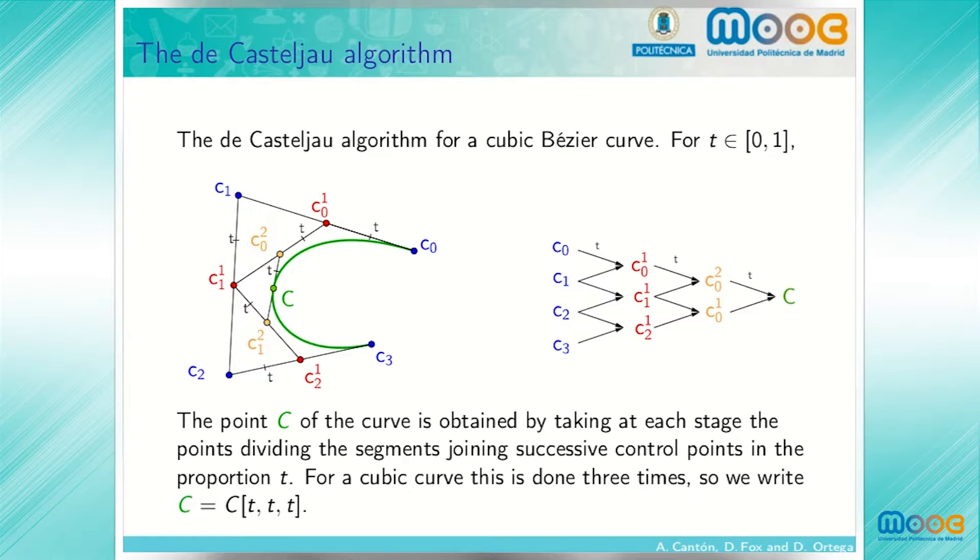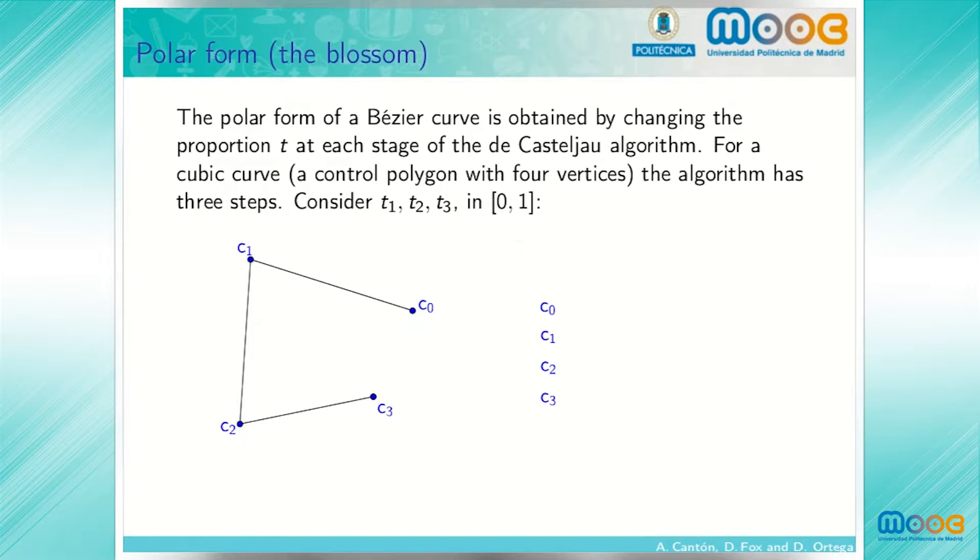The idea of the polar form is that instead of repeating the same value t three times in a row, we'll take different proportions at each step. The polar form of a Bezier curve is obtained by changing the proportion t at each stage of the de Casteljau algorithm.